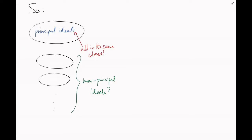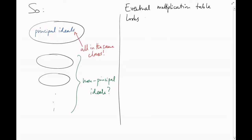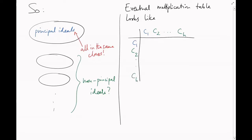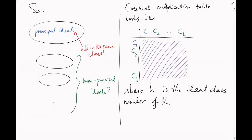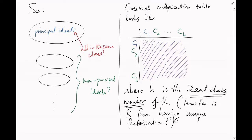As we saw at the start, though, there's no guarantee that all the non-principal ideals are going to live in the same class. Our ideal multiplication table will eventually look like this: a class C₁ of principal ideals, and then maybe a whole bunch of classes C₂ up to C_H of non-principal ideals. This H is called the ideal class number of the ring, and it's our measurement of how far we are from being a unique factorization domain. I should admit I've assumed here that there are only finitely many classes, but I haven't proved it yet — at this stage, H could be infinite. We'll come back to that in a later video.